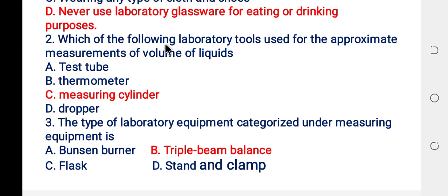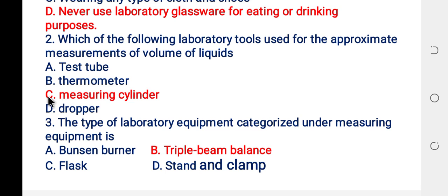Question two: which of the following laboratory tools is used for the approximate measurement of the volume of liquid? A: test tube. B: thermometer. C: measuring cylinder. D: dropper. The answer is measuring cylinder.